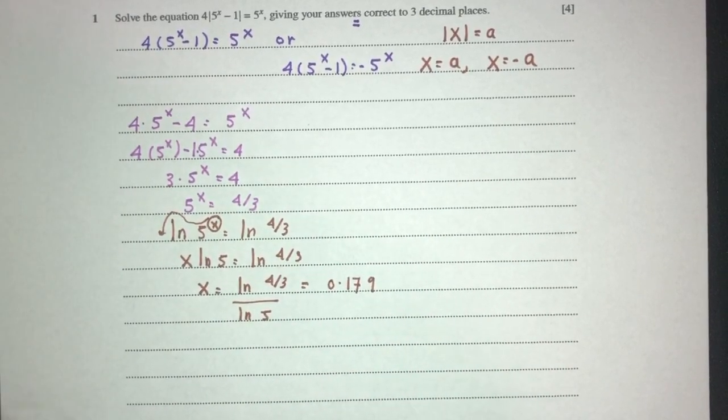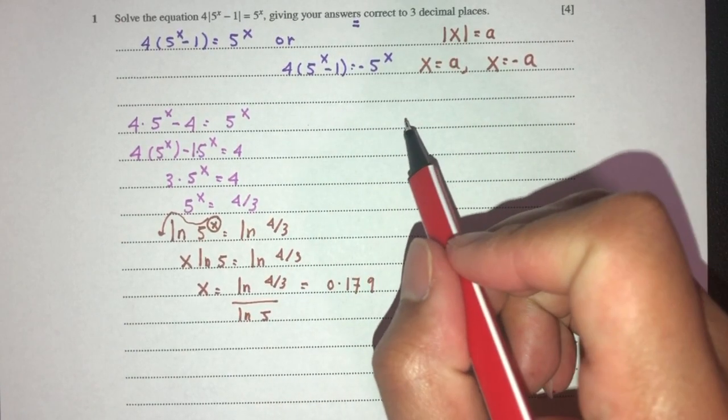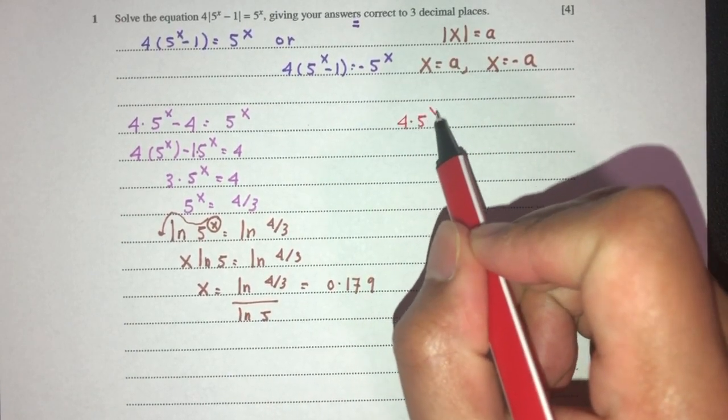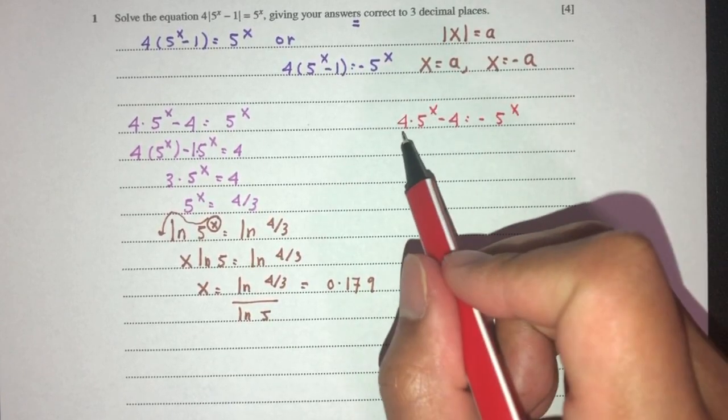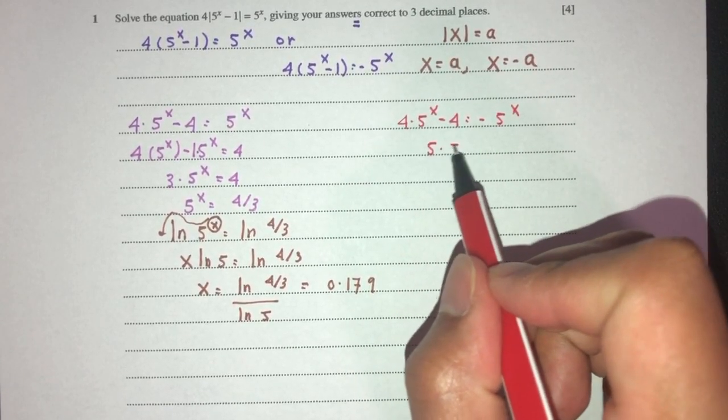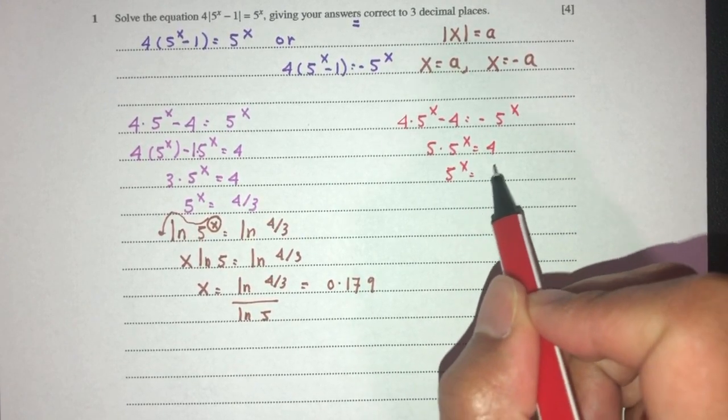Now, what is the second answer? Let's proceed in the same way. That will be 4(5^x) minus 4 is the value of minus 5^x. So this over here becomes plus, so 4 plus 1 is 5, times 5^x is 4. So 5^x is the value of 4 over 5.